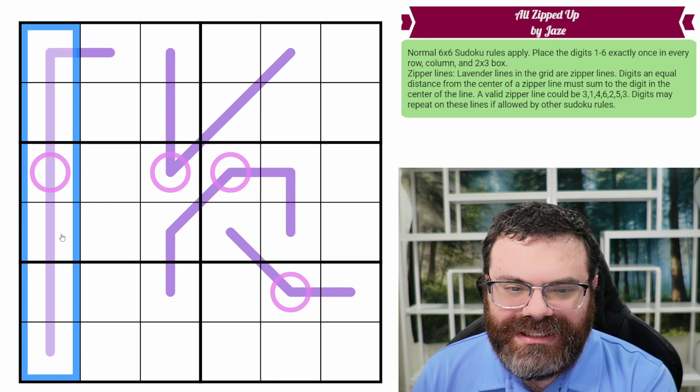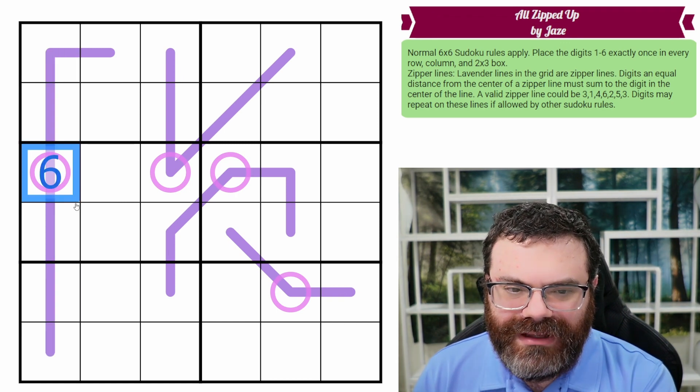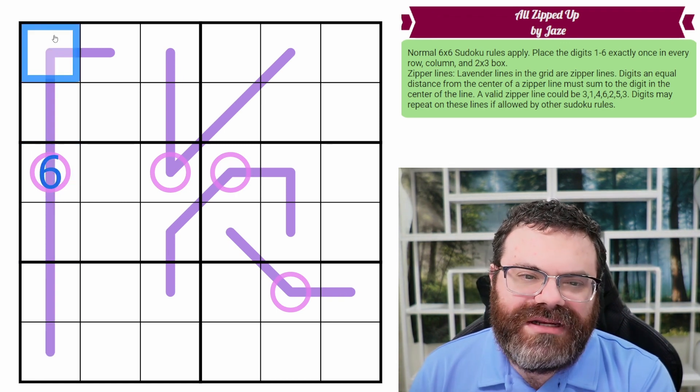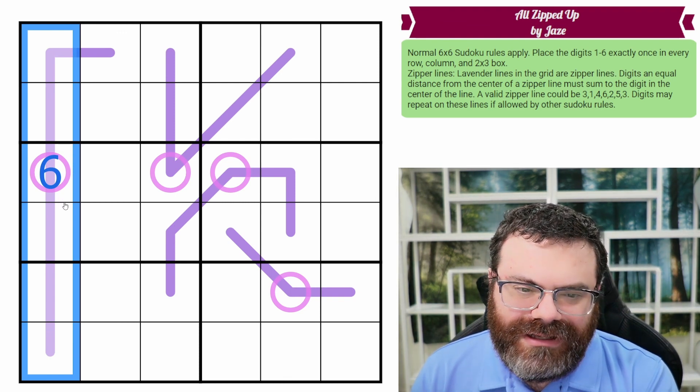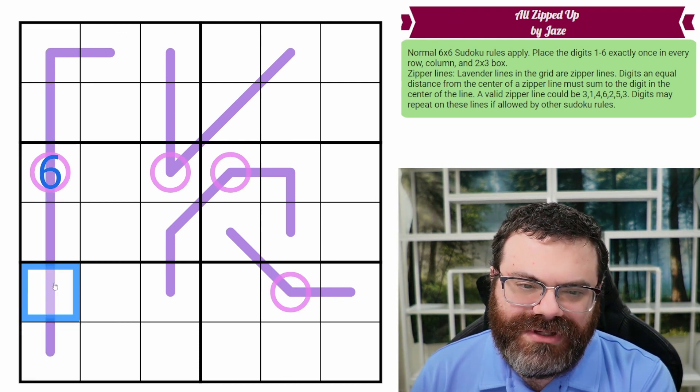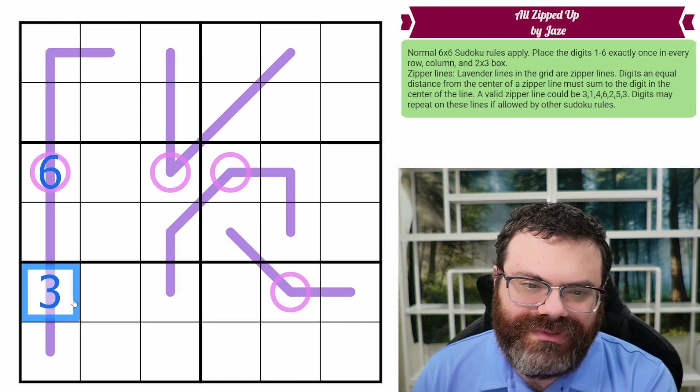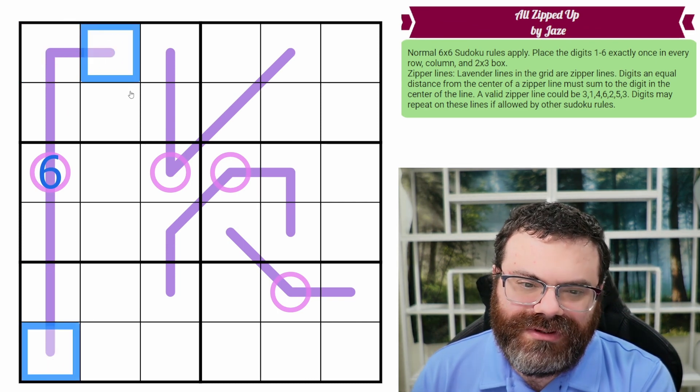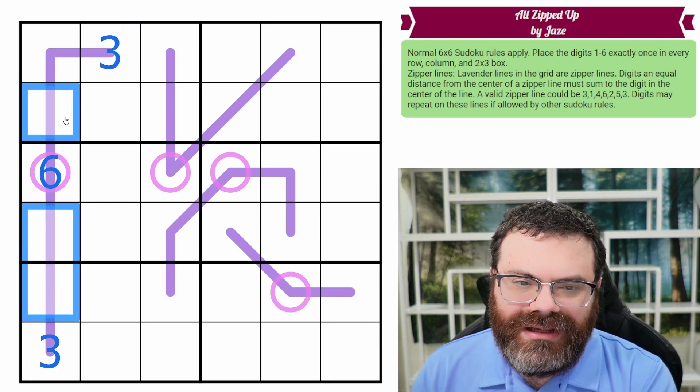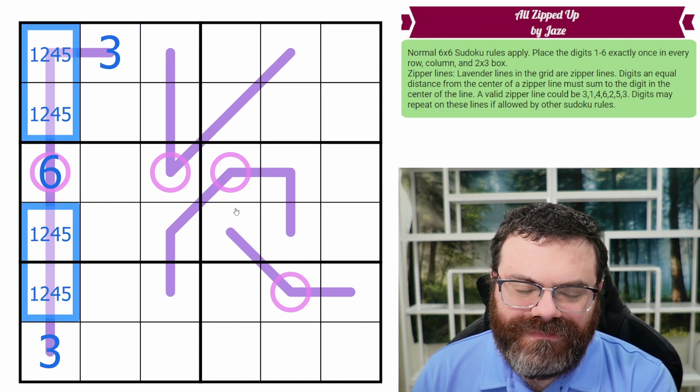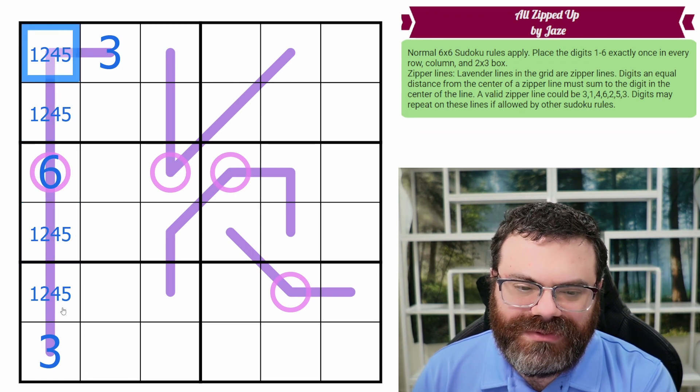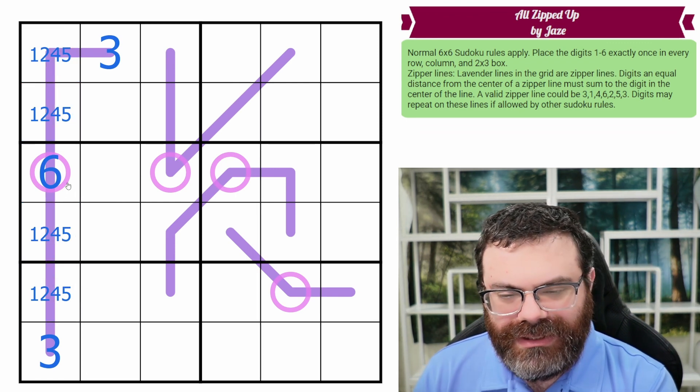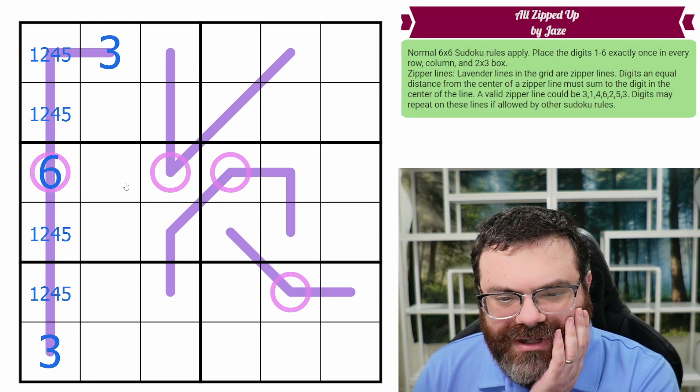So for this column, it needs a six, it's going to go here. Now we need a three in the column. The only place it's going to go is here, because if I put a three here, I would need to add another three to hit six. So these two are threes to add to six. Then we can put that these are one, two, four, five, because one of them is going to be one plus five, and one's going to be two plus four. We don't know which is which. Okay, that's good progress.